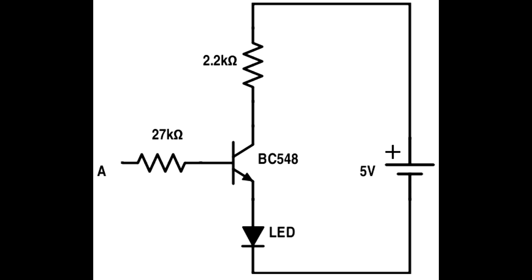An LED connected at the emitter will glow if A has 5V and will not glow if A has 0V or if A is an open circuit.